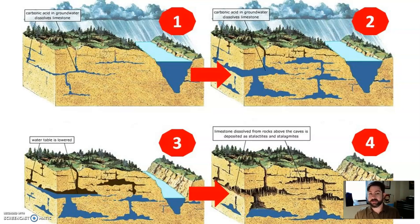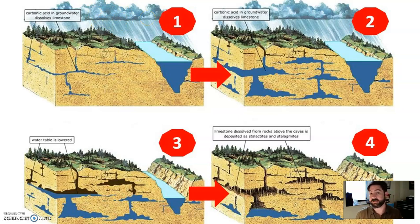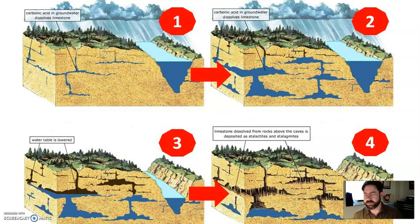Typically — not always — you need dissolvable rock, rock that is able to be dissolved by weakly acidic water. A great example of that is limestone. When precipitation occurs, sometimes that precipitation contains small bits of carbon dioxide, and that can mix with the rainwater to create something called carbonic acid — acid rain. It's not like in the movies where it melts your skin; it's weakly acidic, but still acidic nonetheless.